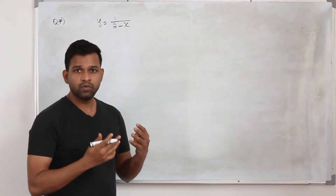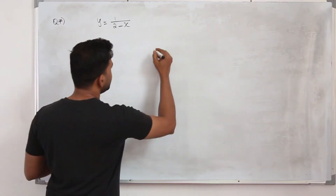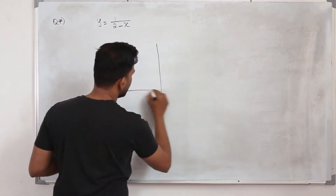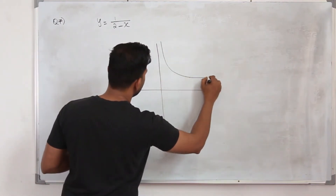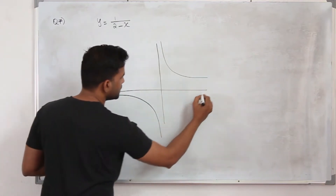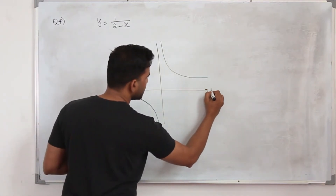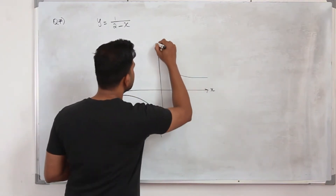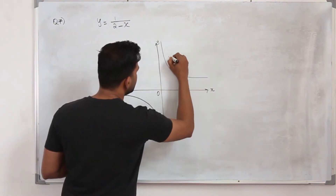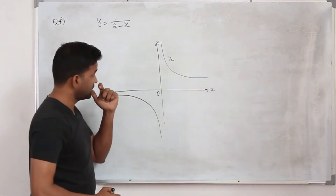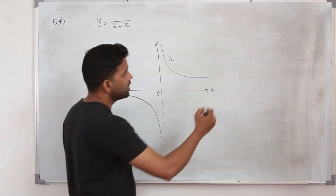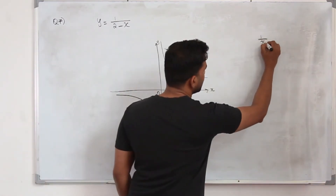So what we do is start with the basic reciprocal graph, that's 1 upon x. It sits in the first quadrant and the third quadrant. Label the axes, mark the origin — this is 1 upon x.